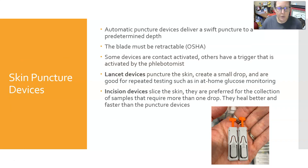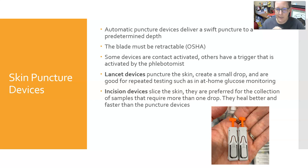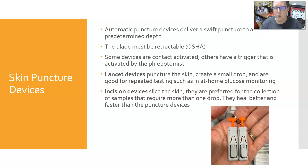Automatic puncture devices deliver a swift puncture to a predetermined depth set by the manufacturer, which is clearly labeled on the boxes. The blade must be retractable — that's an OSHA requirement — meaning it retracts back into the collection device and cannot be reactivated.